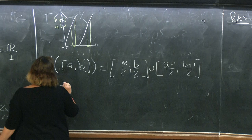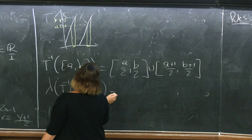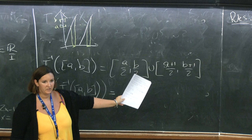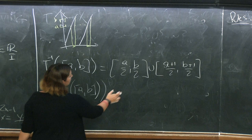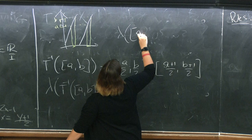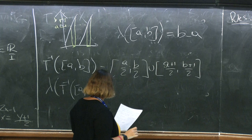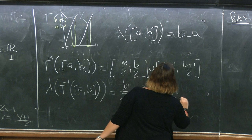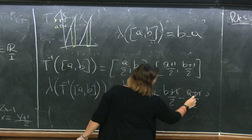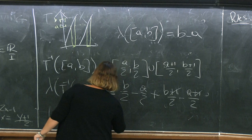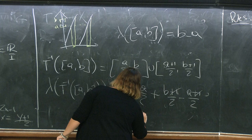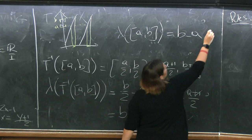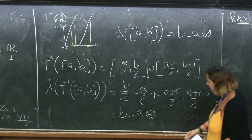When we calculate the Lebesgue measure of this, since the union is disjoint, it is the sum of the Lebesgue measures of the two single intervals. The Lebesgue measure of [a, b] is b − a, so here we have b/2 − a/2 from the first plus (b+1)/2 − (a+1)/2 from the second. The +½ and −½ cancel, leaving b/2 + b/2 − a/2 − a/2 = b − a, which is exactly the Lebesgue measure of [a, b]. So T is measure-preserving.